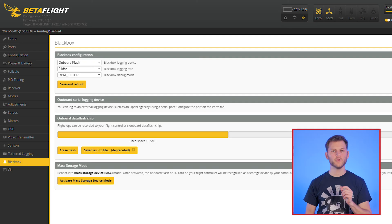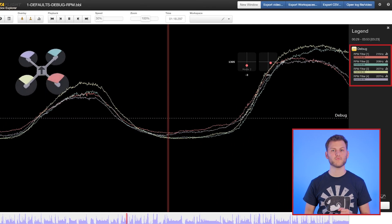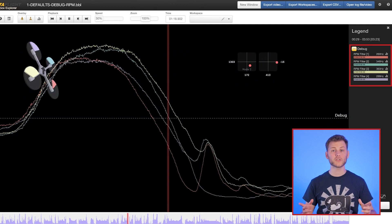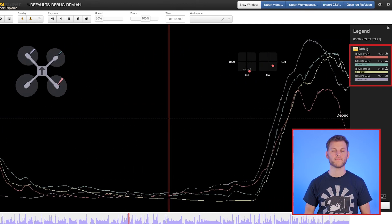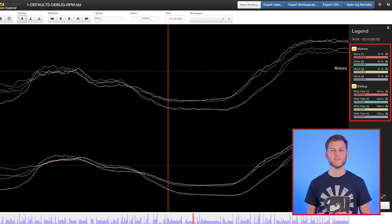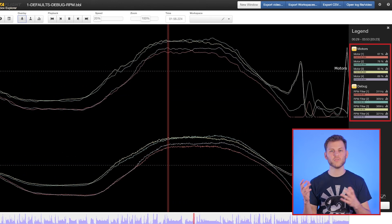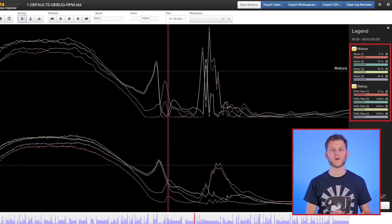Here is a bonus part. This is not really a setting but did you know that you can actually record what the RPM filters are doing. If you use the debug mode RPM filters in the black box tab, you will be able to record the frequencies targeted by the RPM filters. In black box explorer, the debug graph will now show the 4 values which correspond to the 4 motors. And if you display the motors output at the same time, you can actually see how the frequencies are linked to the RPM.